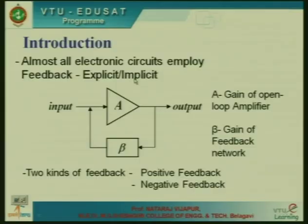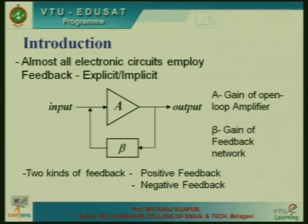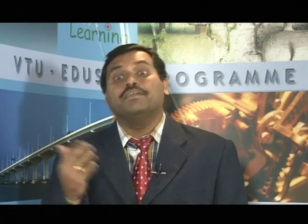Almost all electronic circuits employ feedback. This feedback may be explicit or implicit. Explicit means the feedback network is visible. Implicit means feedback is a part of the circuit where you have to analyze how the feedback is happening. Almost all electronic circuits employ this kind of feedback.